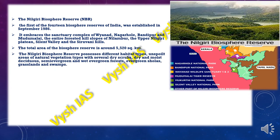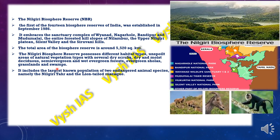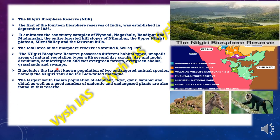The Nilgiri Biosphere Reserve has many different types of habitat — mainly unspoiled areas of natural vegetation including dry scrub, dry and moist deciduous, semi-evergreen, and wet evergreen forest, as well as grasslands and swamps, covering all five types of vegetation. It includes the largest known population of two endangered animal species: the Nilgiri Tahr and the Lion-tailed Macaque. The largest South Indian population of elephant, tiger, gaur, sambar and cheetal are found here in good numbers.